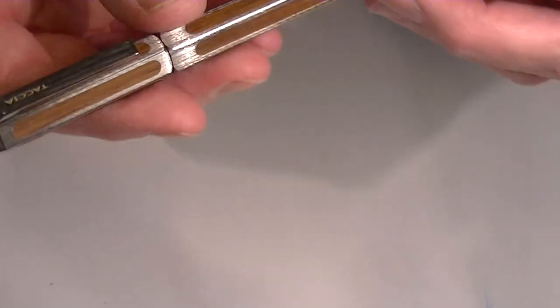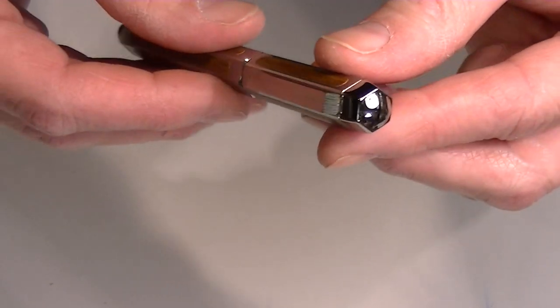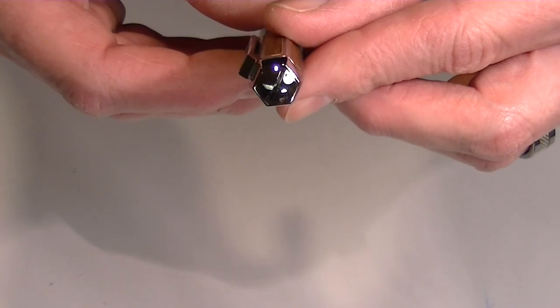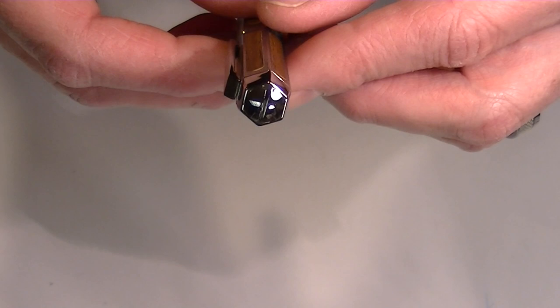On the clip of the pen, we have Tassia, the logo engraved on the clip, and on the top of the pen is a bolt-shaped head, like a screw head with a slot in it for a regular screwdriver.